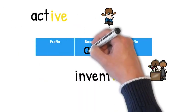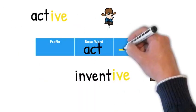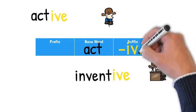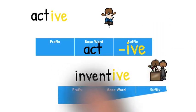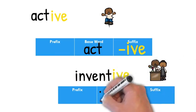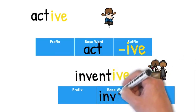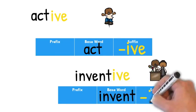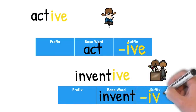I can then add in my suffix, I-V-E. And you can see that that is a suffix, not just a sound. With inventive, my base word is invent, and then I add I-V-E for my suffix again. Inventive.